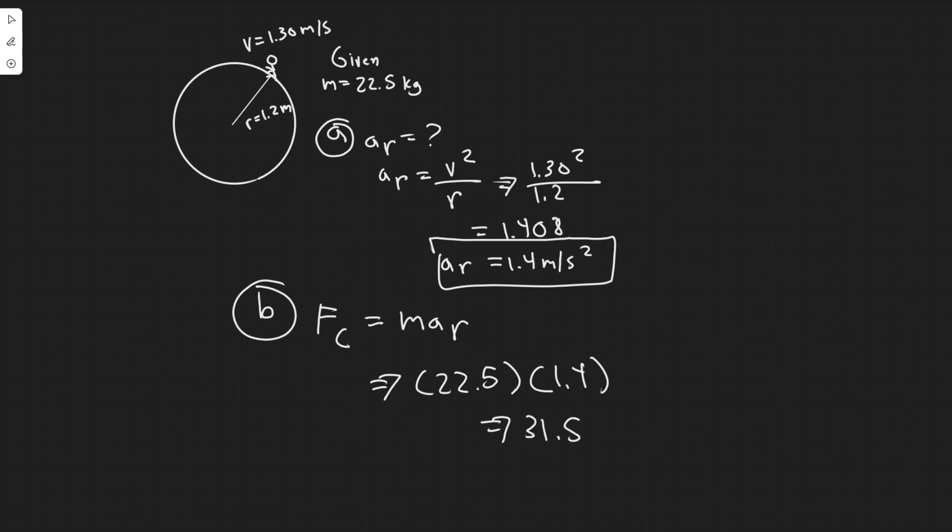that gives you 31.5. The units of force are newtons. So 31.5 newtons, that's the net horizontal force exerted on the child. So they're basically just talking about centripetal force.